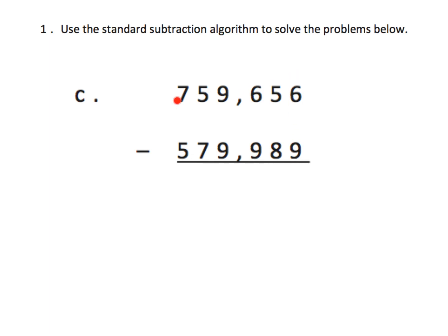So if I'm going to set this up correctly and do all the regrouping necessary: six ones is not enough to take away nine ones, so I'm going to regroup. I'm going to take one of these tens, leaving us with four left over, and regroup them for ten ones, so that gives me 16 ones.